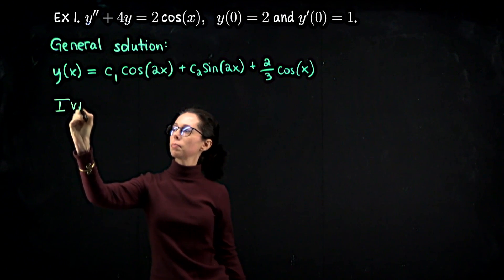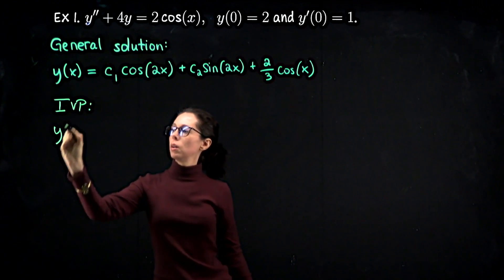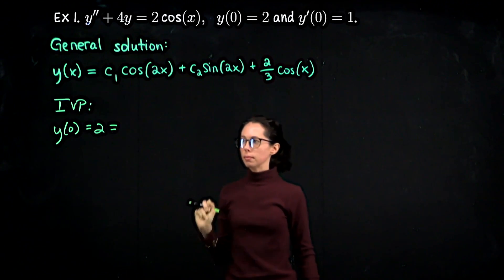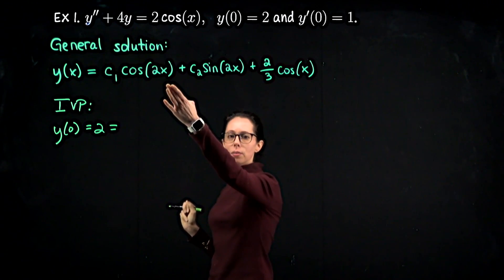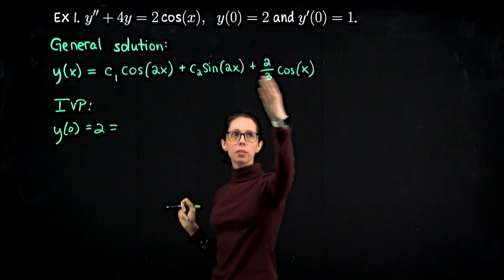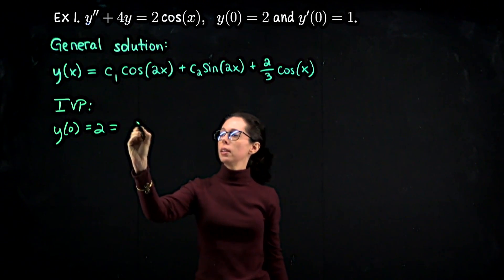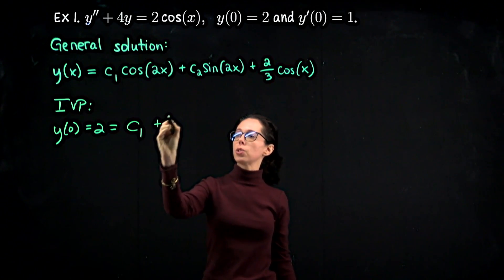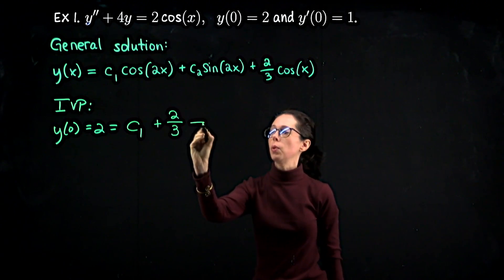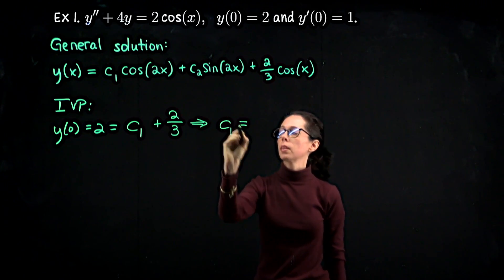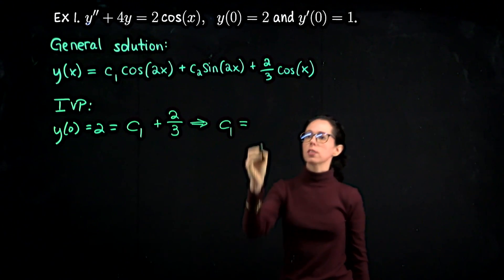For this IVP, we know that when x equals zero, y is two. Plugging zero into the general solution: cosine of zero is one, sine of zero is zero, cosine of zero is one. So the right-hand side is c1 plus zero plus two-thirds. This immediately allows us to solve for c1. C1 is two minus two-thirds, which is six-thirds minus two-thirds, giving us four-thirds.